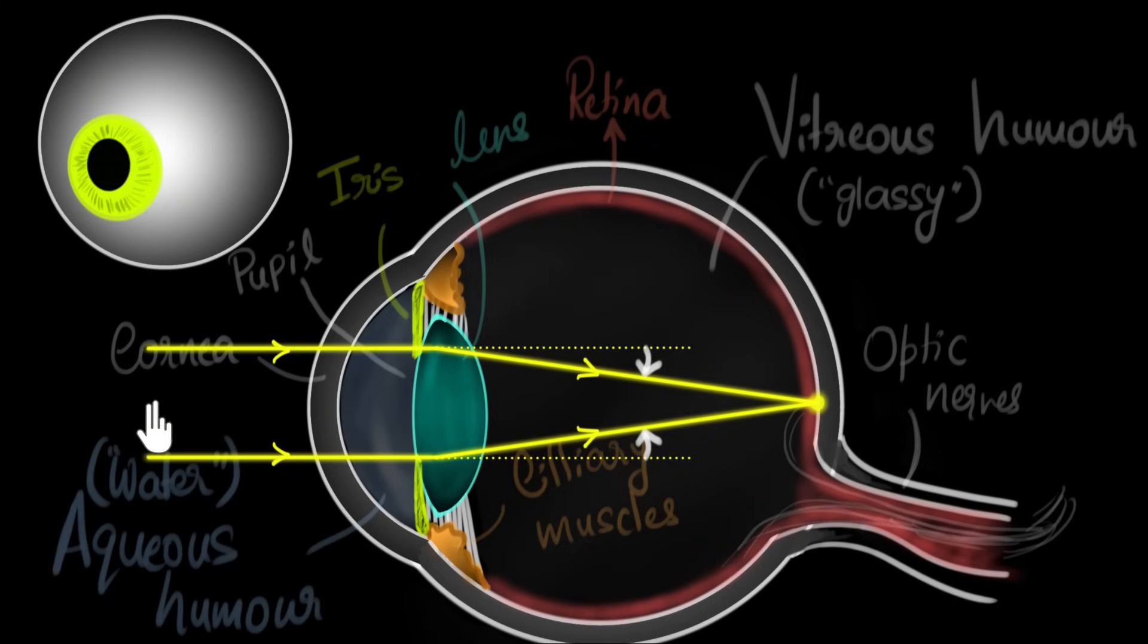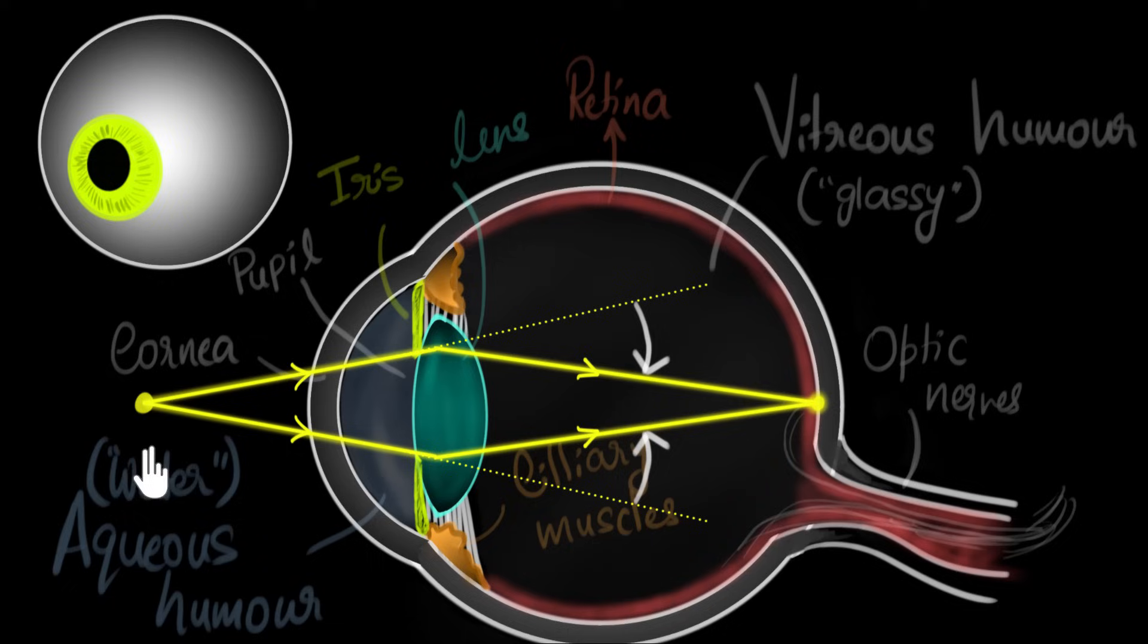And as a result, we will see now the required bending is higher. Alright? So just concentrate on the bending when the object comes closer. Here it is. Can you see that? The required bending is more. More refraction is needed, meaning more optical power is needed.